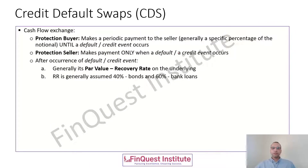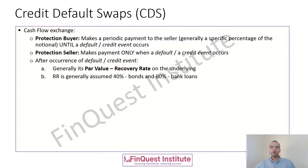From a cash flow perspective: the protection buyer makes periodic premium payments to the protection seller until a default occurs. The protection seller makes only one payment if a default or credit event happens. After the credit event, the payment exchanged is generally par value minus the recovery rate. For bank loans, the recovery rate is assumed to be 60%, whereas for bonds it is assumed to be 40%, as there is a certain portion of the bond payment expected to be recovered — this is the recovery rate, or RR.